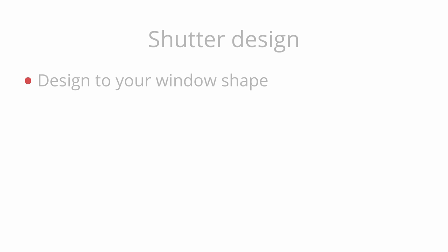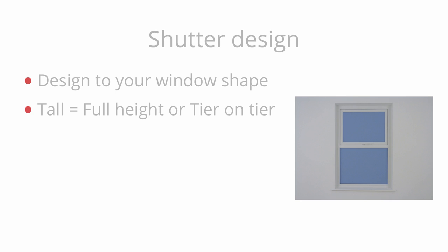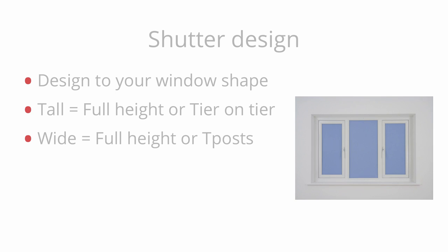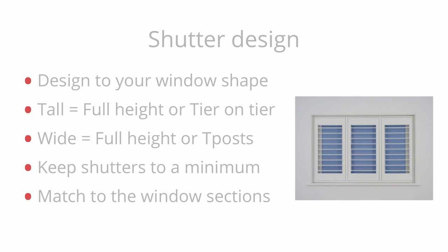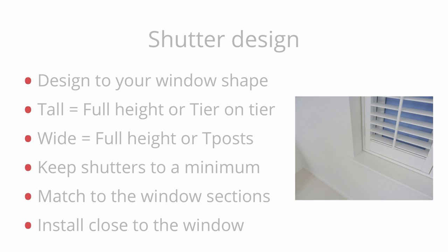To recap: when choosing a design for your window, base it around your window shape and size. For a tall window, a full height or tier on tier design would be good. If your window is wide and short, then full height or a T-post design would be more suitable. Keep the number of shutters or folds to a minimum. Ensure you match the number of shutters to the number of sections in your window. Avoid shutters fitting across the uprights of your windows, as you can see them when the louvers are open. Part of getting a good looking shutter is getting the design right. You don't have to open a shutter to let the light in — most people don't; it's only the louver blades that get tilted. With this in mind, it's best to fit the shutters inside the recess, as close to the window as possible. For extra help on shutter design, choosing louver sizes, or the right size extension, take a look at our blog for further videos.